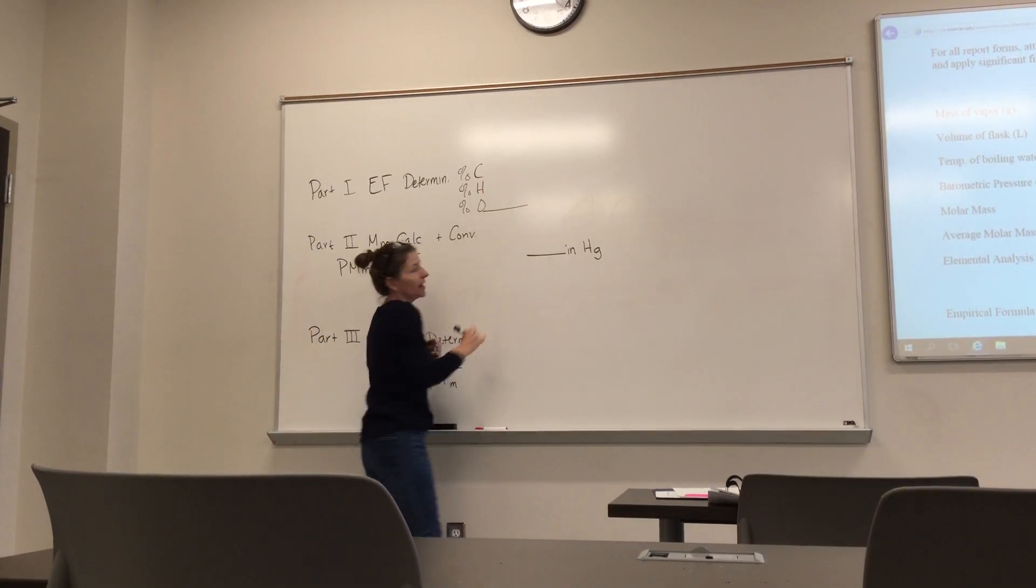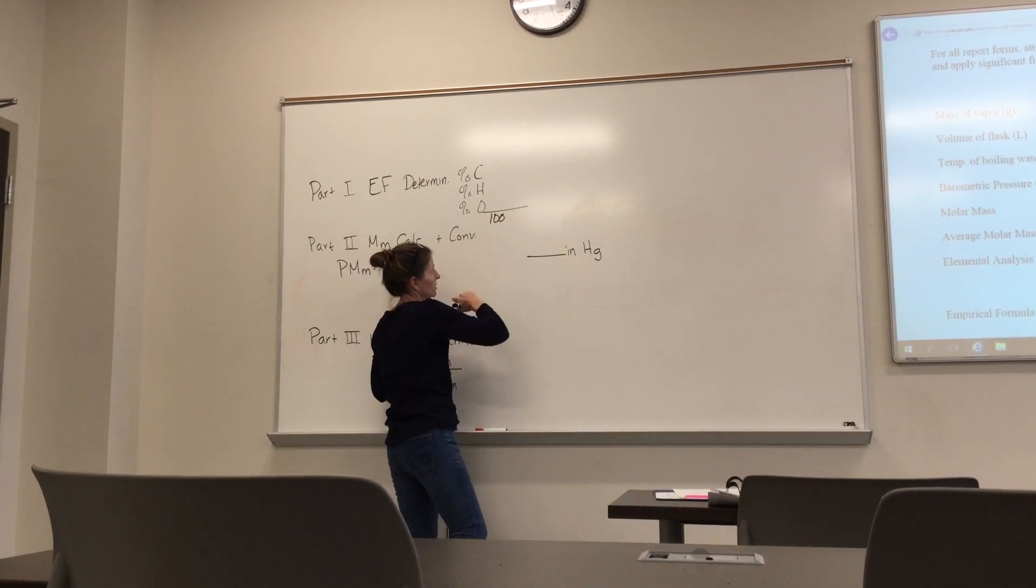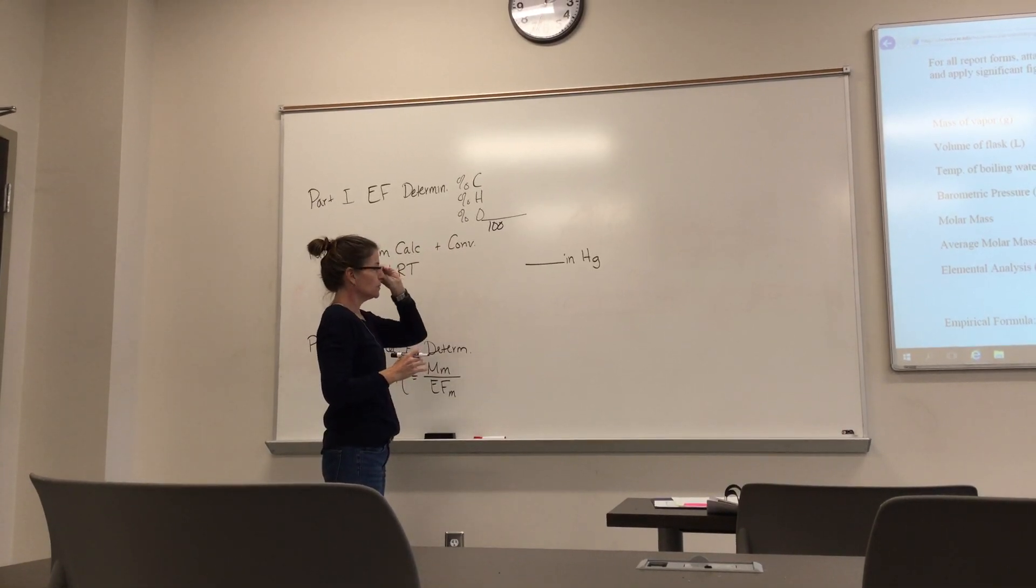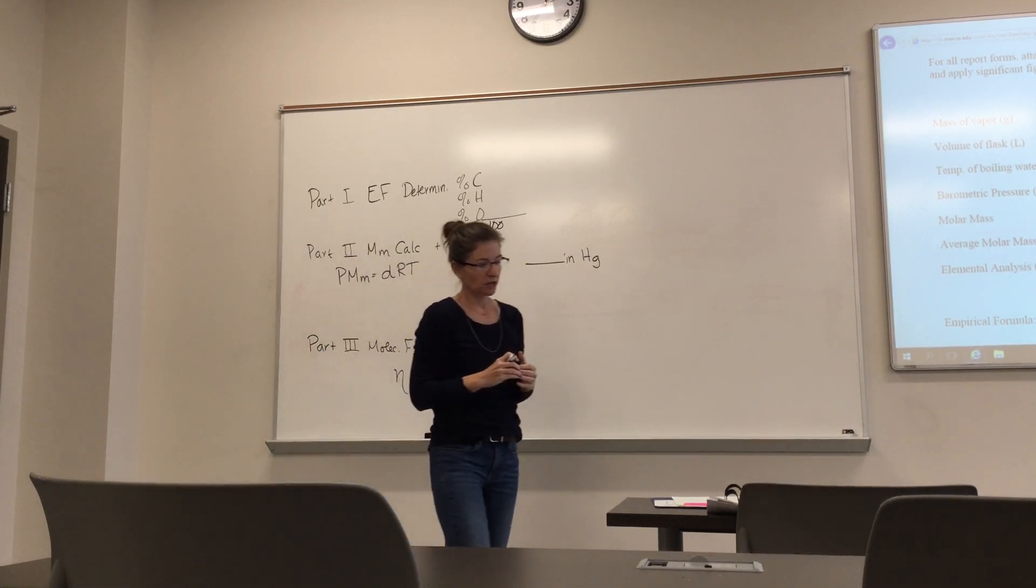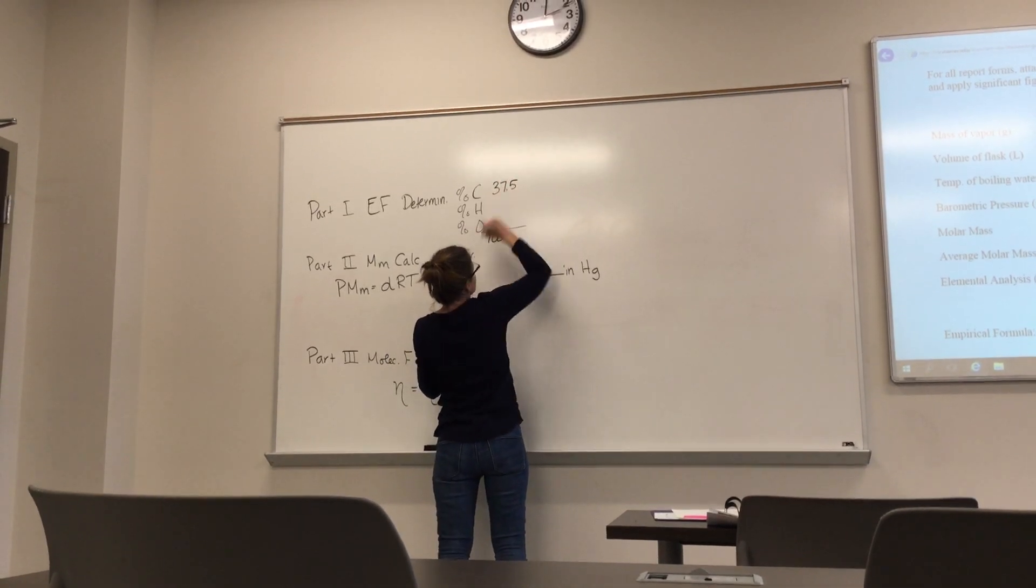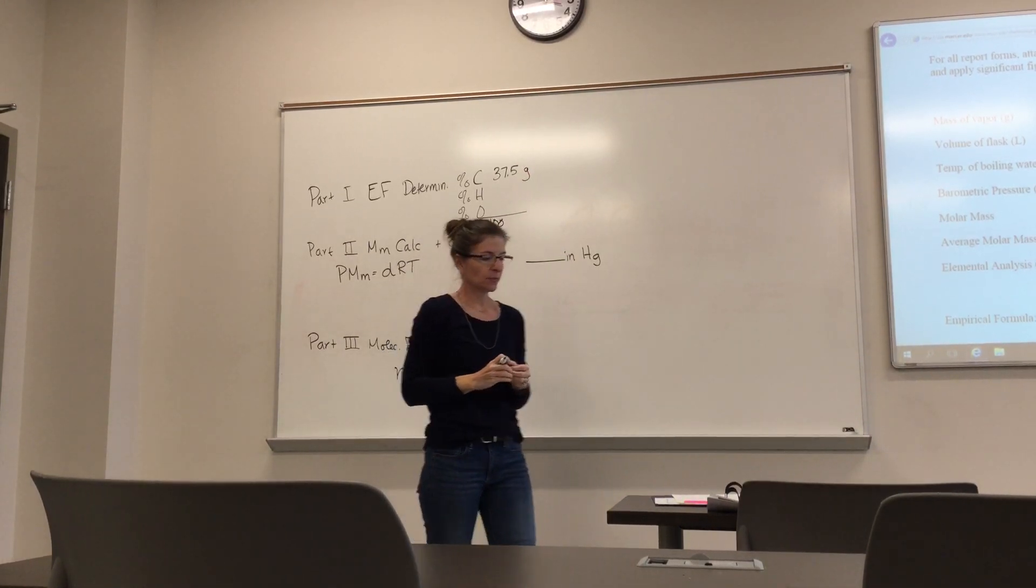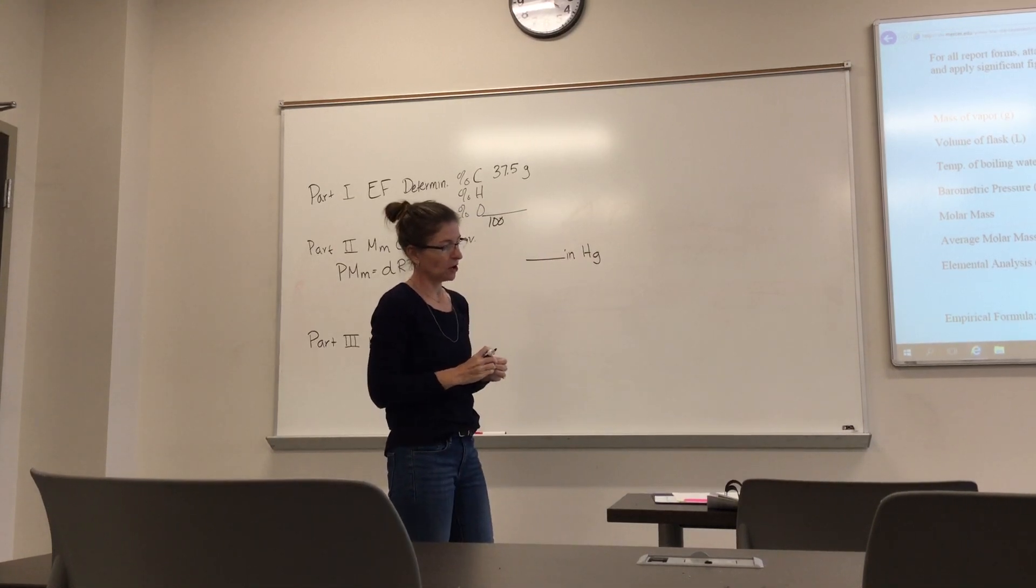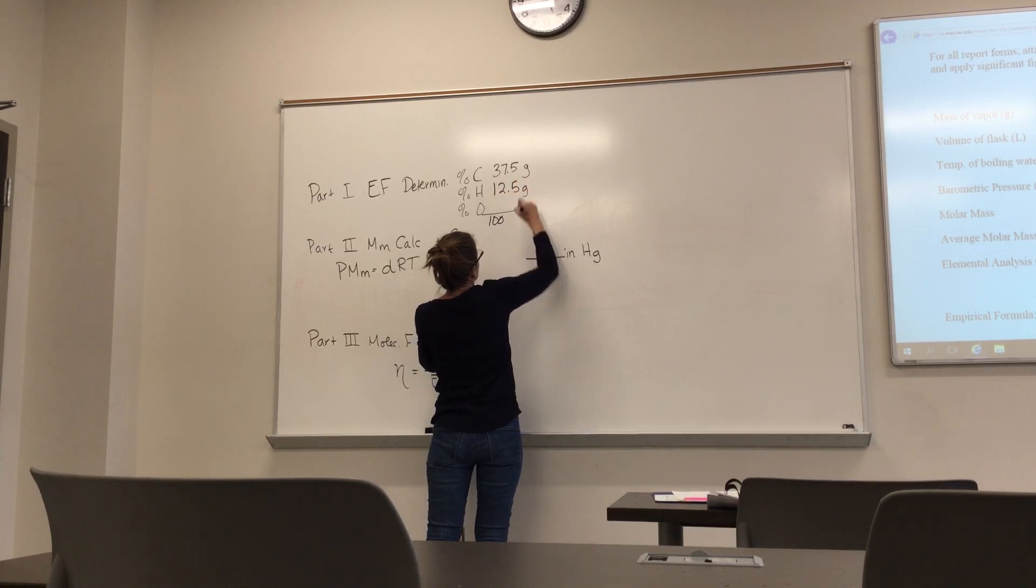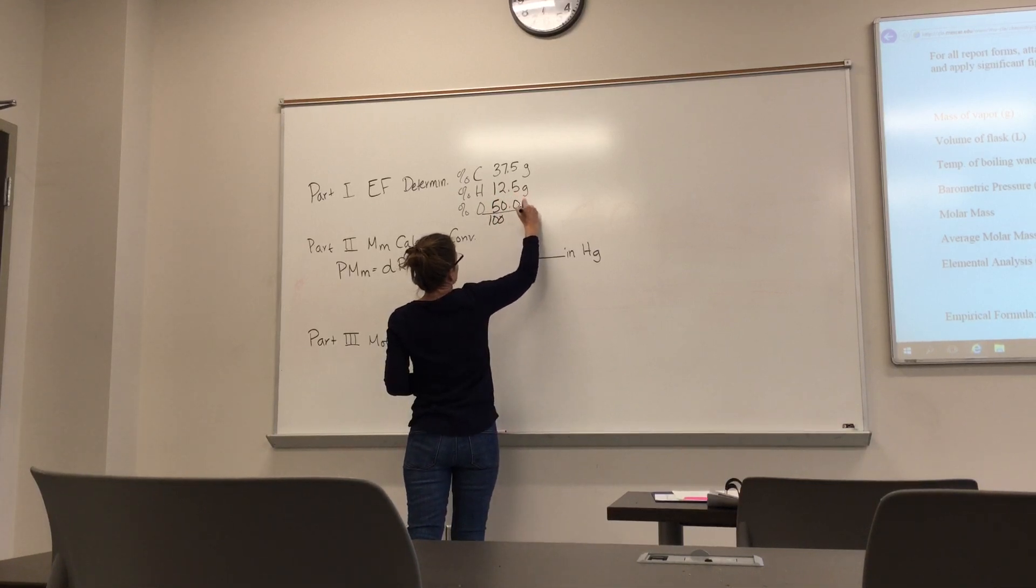And these percents, they better add up to what? That's right, a hundred. They should add up to a hundred. Because then we're going to assume that these masses, or these percents, which we're going to look at as a hundred percent, are going to then add up to a hundred grams. So for mine, I ended up with, say, thirty seven point five percent. And because it's based on a hundred, I'm going to go ahead and say, okay, let that thirty seven point five percent equal thirty seven point five grams of carbon. And then I had twelve point five of hydrogen. And of course you could probably very quickly figure out my oxygen. And this ends up being fifty grams of oxygen.